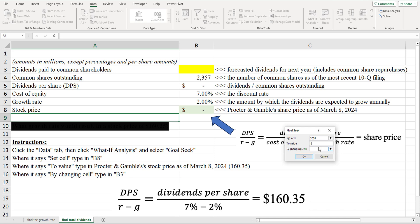we're going to come to B8, so the share price, and we're going to say, set it to value 160.35. And then by changing Cell, right here, B3, which is the dividends or distributions to common shareholders. So I'm going to click OK.